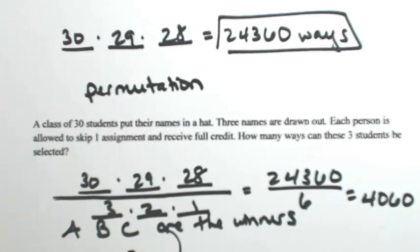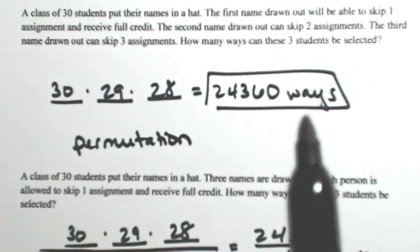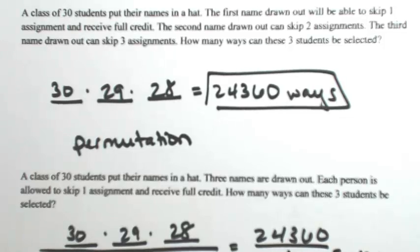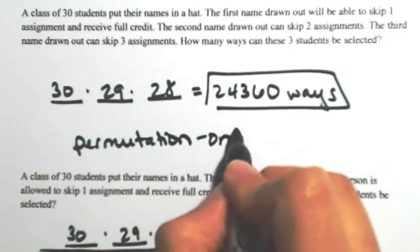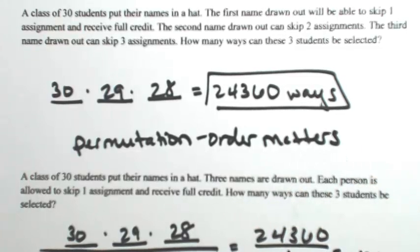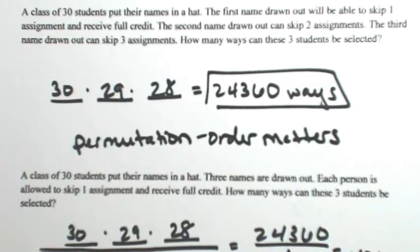The big difference between the two is that in the permutation, the first name got something different from the second name, which got something different from the third name. So the order in which you pick these winners makes a difference. In a permutation, the order matters. If you switch two names, they're going to get something different.